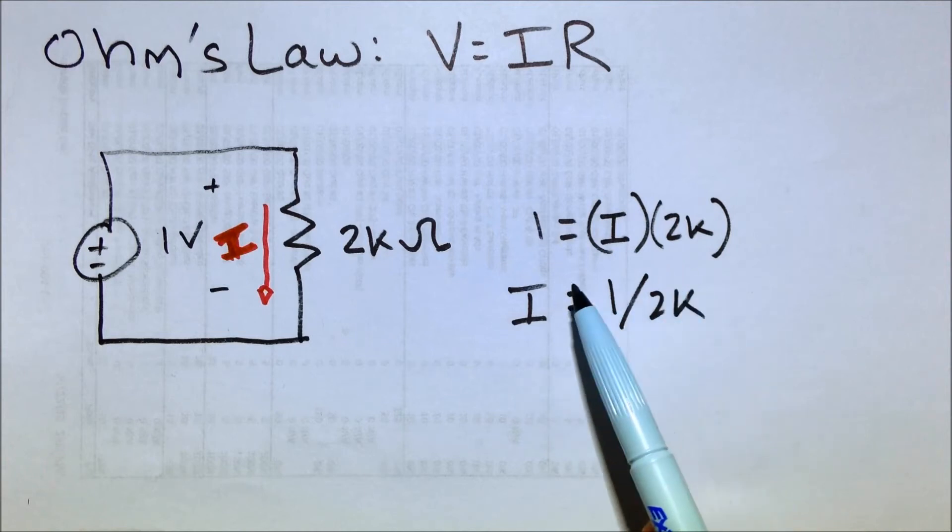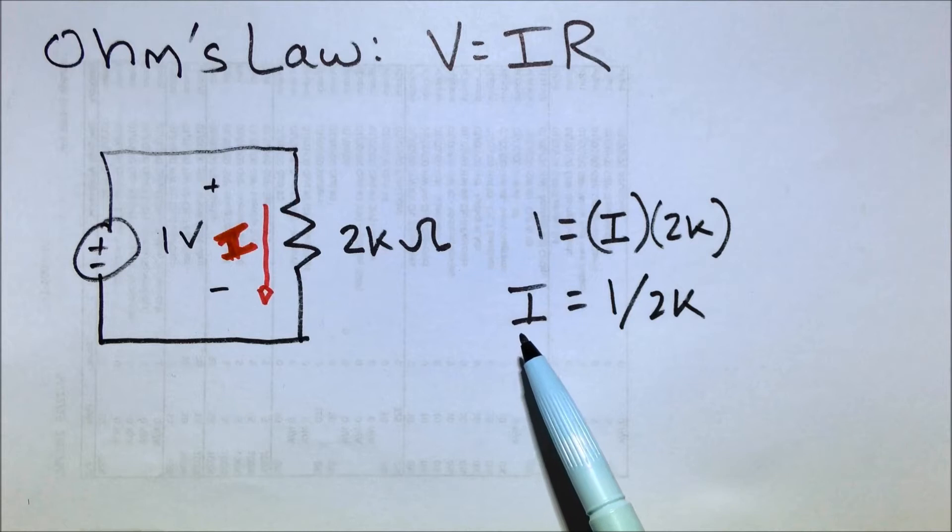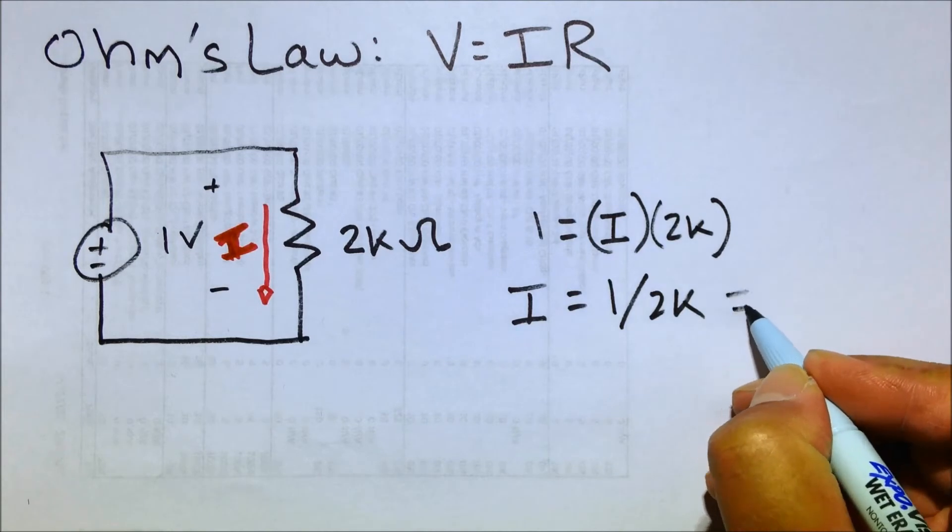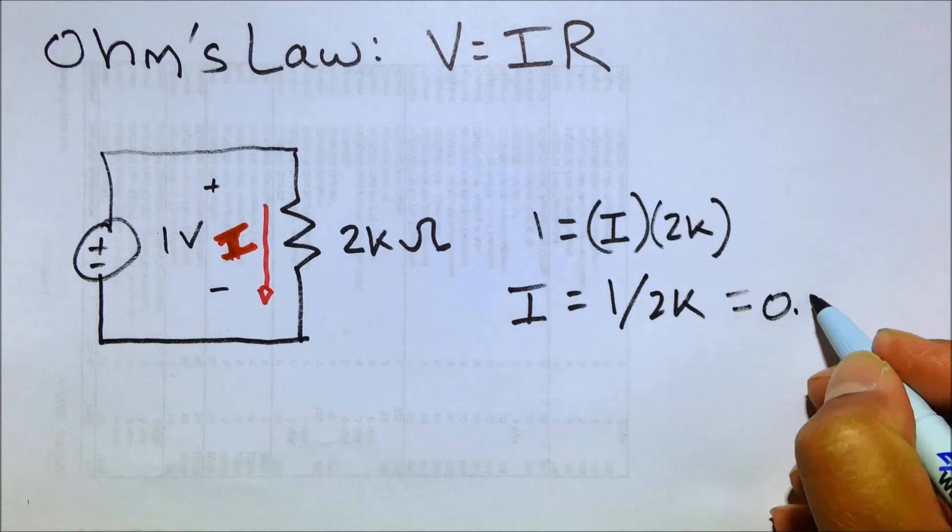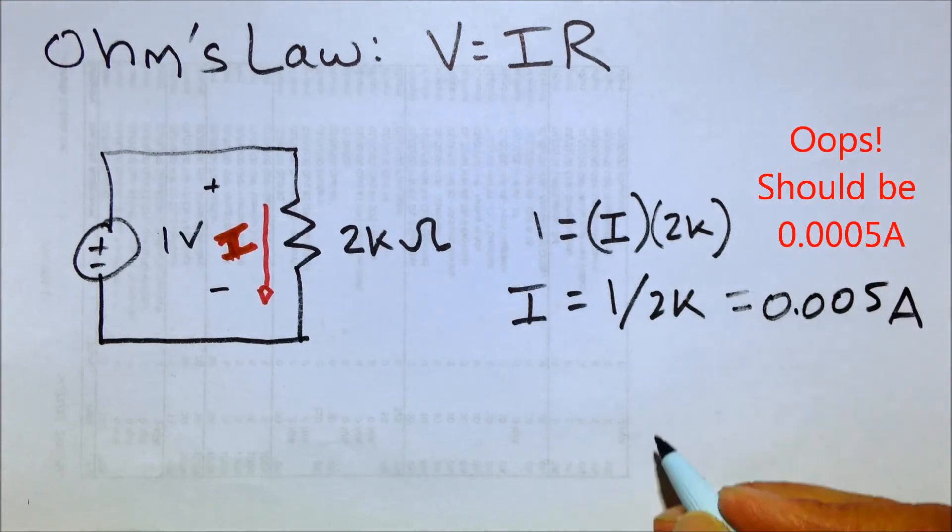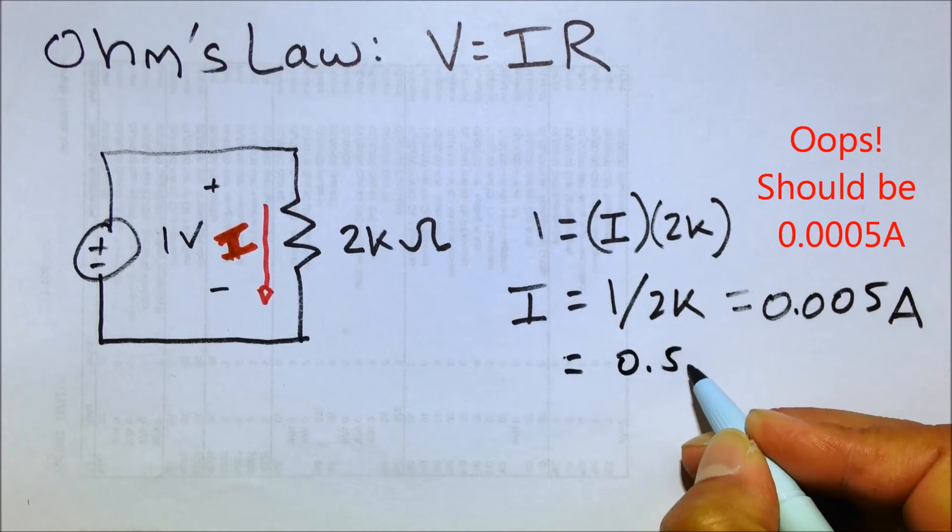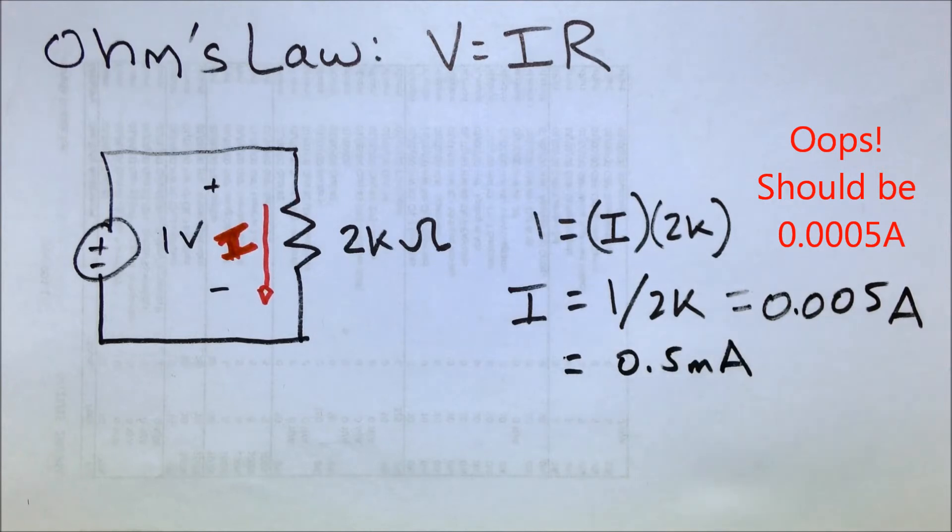So now it's just some basic algebra, we're going to isolate the current on one side, that variable on one side, and we have the current equals 1 divided by 2K, and that equals 0.005 amps. Shorthand, let's go ahead and say 0.5 milliamps.